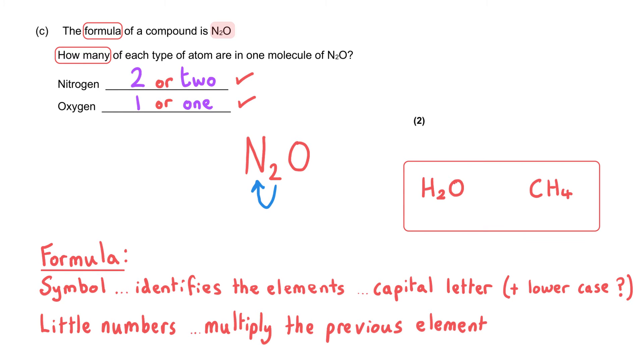This is the same for other formulae as well, more common ones than N2O. We might have H2O, where that two belongs to the hydrogen, meaning two hydrogen atoms and one oxygen atom. Or CH4 for methane, where the four belongs to the hydrogen, so we have one atom of carbon and four atoms of hydrogen.